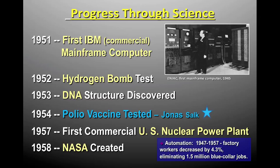One last thing before we get to civil rights: progress through science in the 1950s. The first thing you're writing down is in 1951, IBM creates a computer. There is a picture of it on the slide — that man is standing next to one computer. Computers used to fill up a room; now we have them in our pockets. Our iPhones, our Galaxies, they're all computers. There is more computing power in your small little smartphone than there was on the first basic NASA mission to the moon.